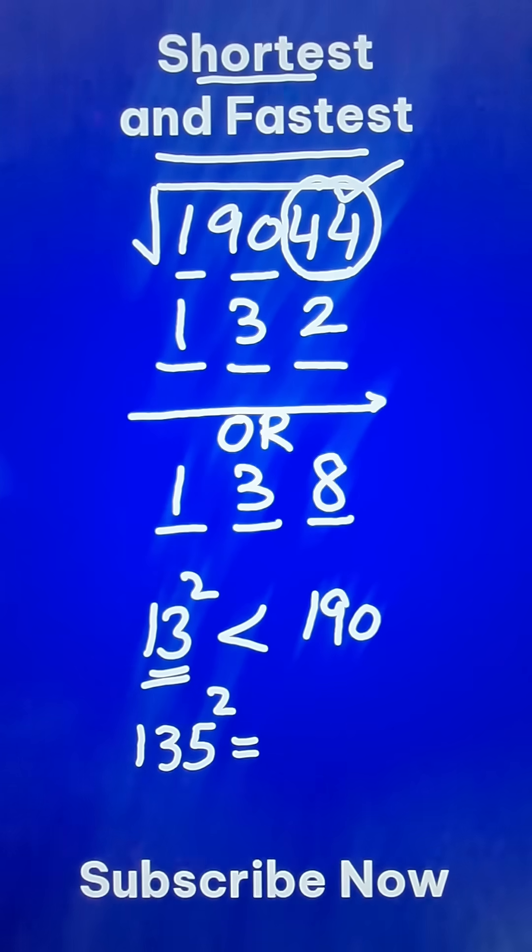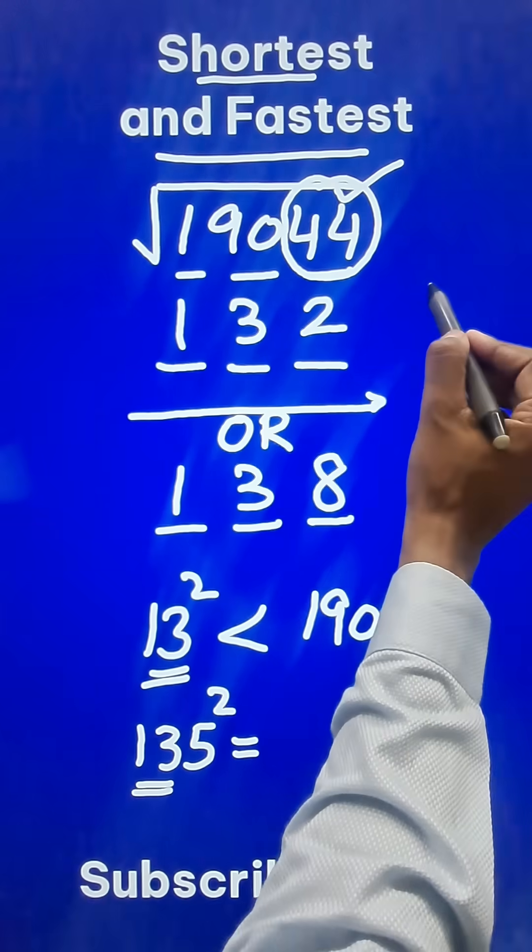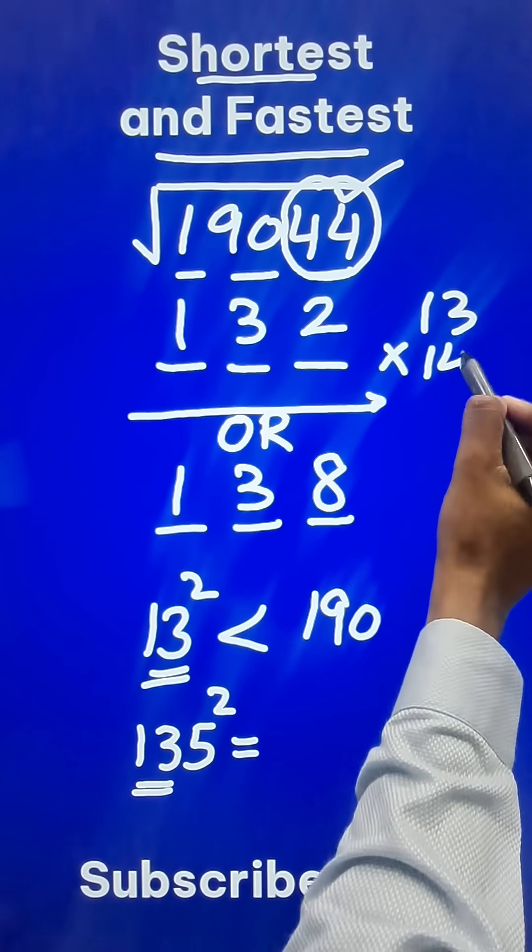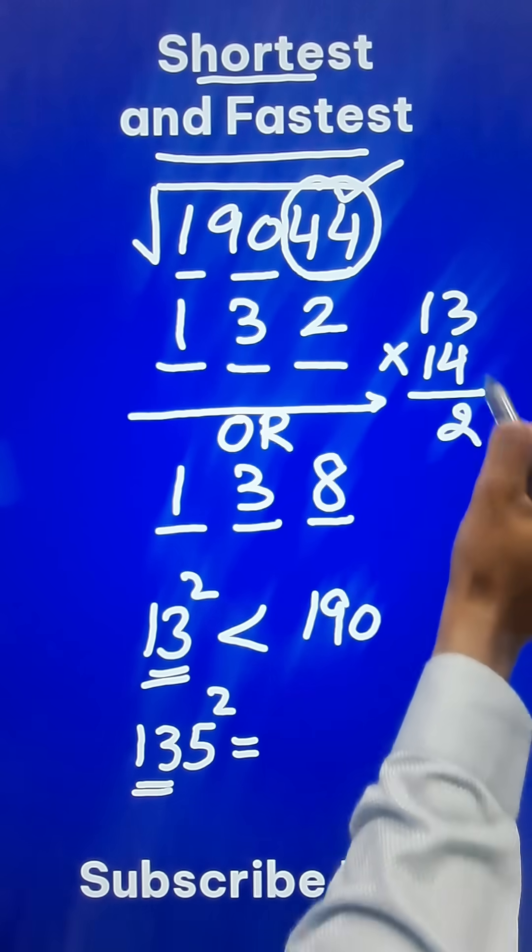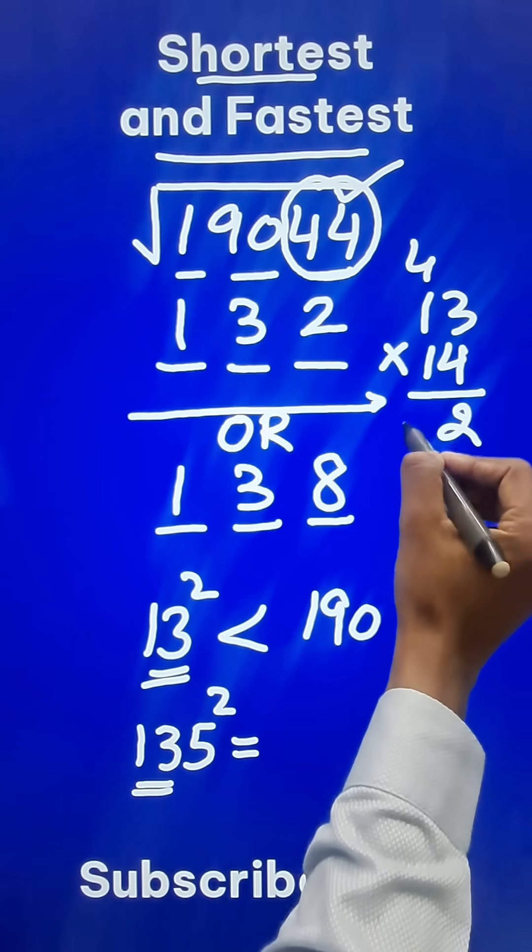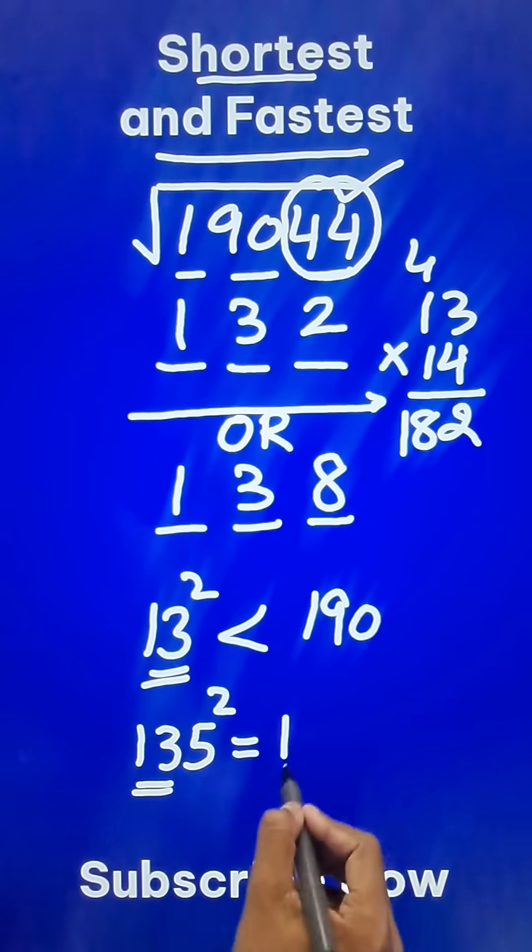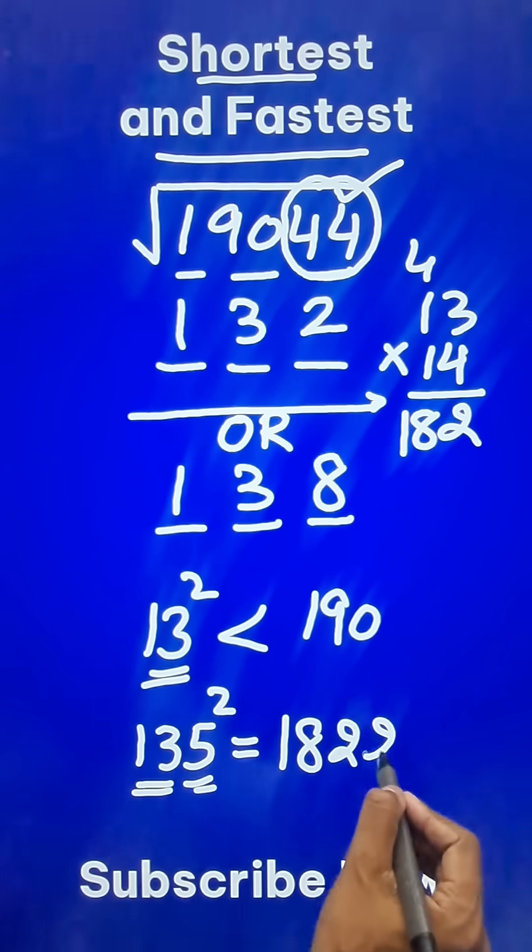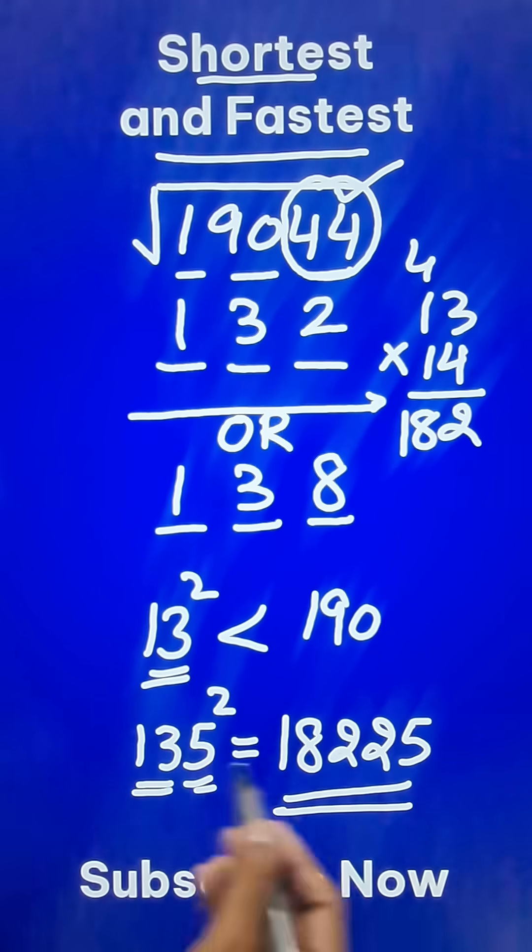The square of 135 will be obtained when you multiply 13 by its consecutive number. That means 13 multiplied by 14 and how much is that? 14 times 3 is 42, carry the 4. 14 times 1 is 14 plus 4 equals 18. 182 followed by 5 square, which is 25. So now what do we do with this?